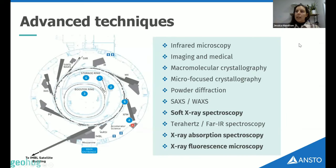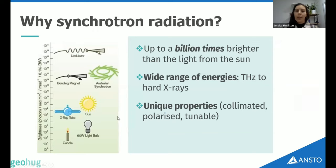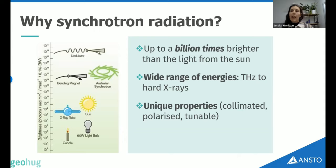These are the currently built beamlines that we use every day — I'm only going to touch on a few or we'll be here all night. The reason synchrotrons can offer these specialized techniques is that the radiation given off is about a billion times brighter than the sun, and it's the full spectrum of energy — from terahertz to visible light, UV and hard X-rays. We use X-rays a lot because their wavelength is on a size scale similar to atomic spacing in many materials, so they're really useful for a lot of things.